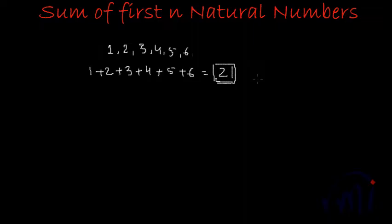This was very easy because we had only 6 numbers and all of them were very small. But what about if we have 100 numbers or 200 numbers? To add them, we have to have a formula. So today we are going to derive that formula step by step, so you understand the logic behind it and it will be easier for you to remember.